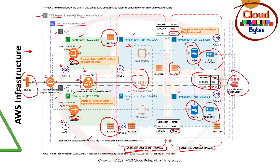A few things to note about NACLs: they are stateless, meaning they don't maintain state. If you define an inbound rule, you must also define an outbound rule — outbound is not automatically granted. NACL rules are numbered between 0 and 32,766. You should define deny rules before allow rules for proper routing. Ephemeral ports are between 32,768 and 65,535 — these are the ports used to send responses. If you don't open the ephemeral ports, responses will never go out. NAT gateway uses ports 1024 to 65,535.